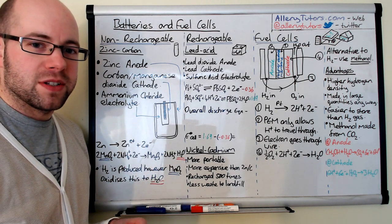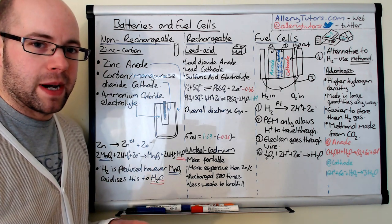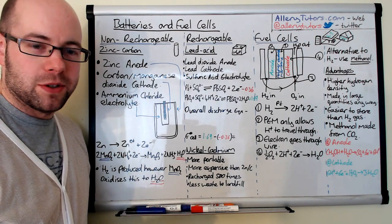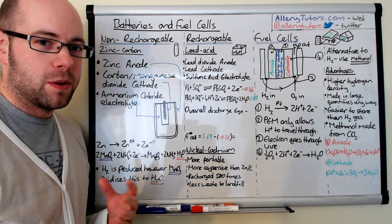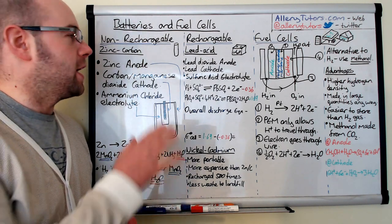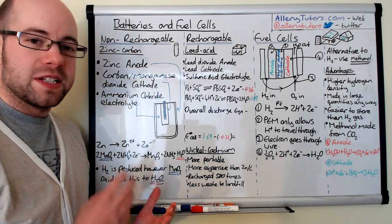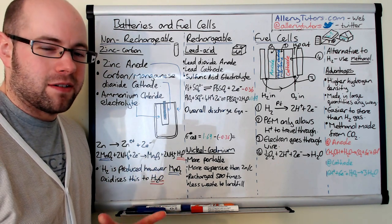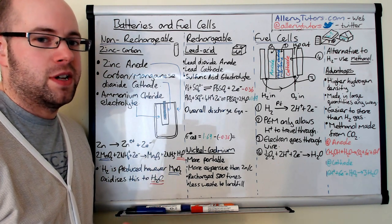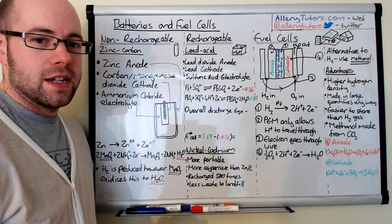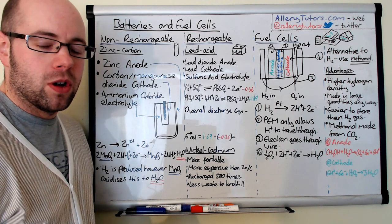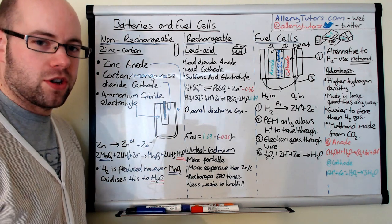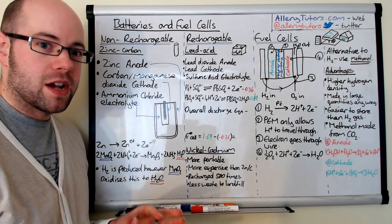The most common battery is the zinc carbon battery. It's quite a cheap battery — you can still buy them in supermarkets, normally in the budget range. They basically have a zinc anode, a carbon and manganese dioxide cathode, and the electrolyte is ammonium chloride. This is the diagram I've drawn here to show how the battery is actually made up.